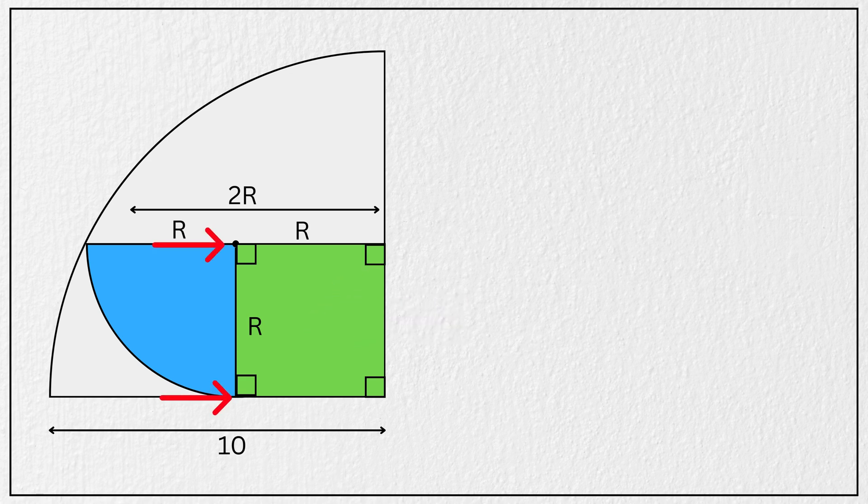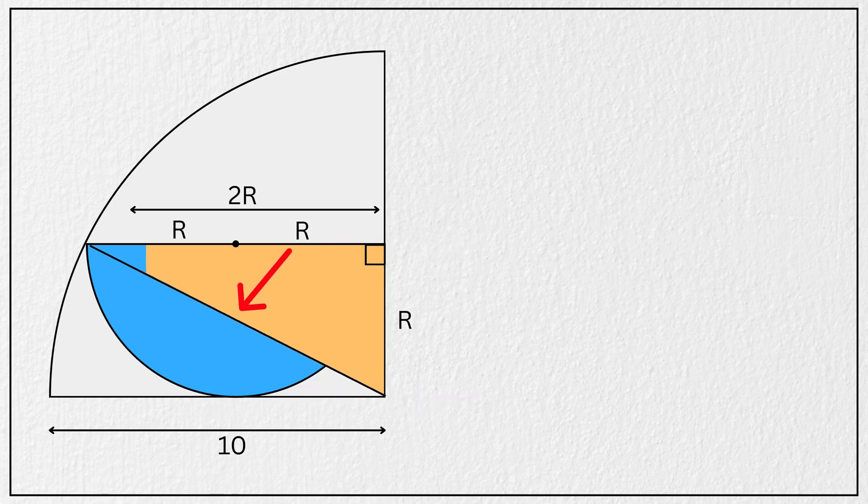And since this is r units, that means this length here is also r units, correct? Now, look at this right triangle formed by the radius of this quarter circle and the diameter of this semicircle. Here the base is r units, the height is 2 times r units, and the hypotenuse is 10 units.